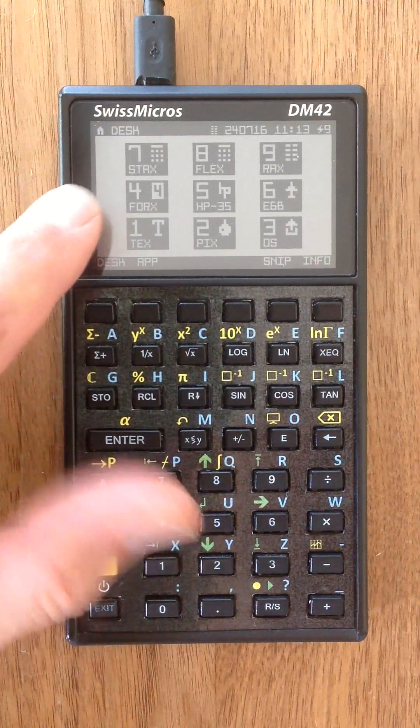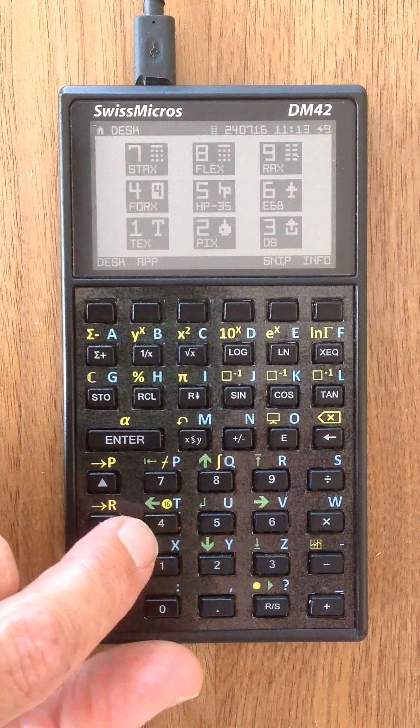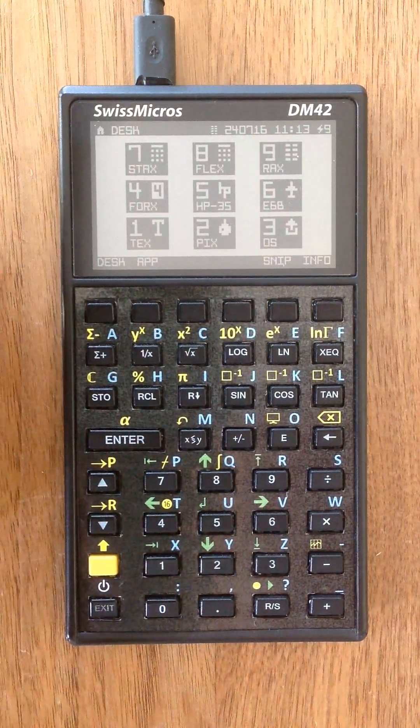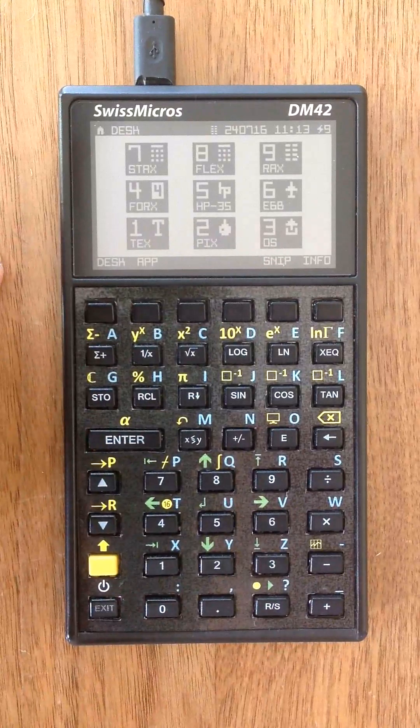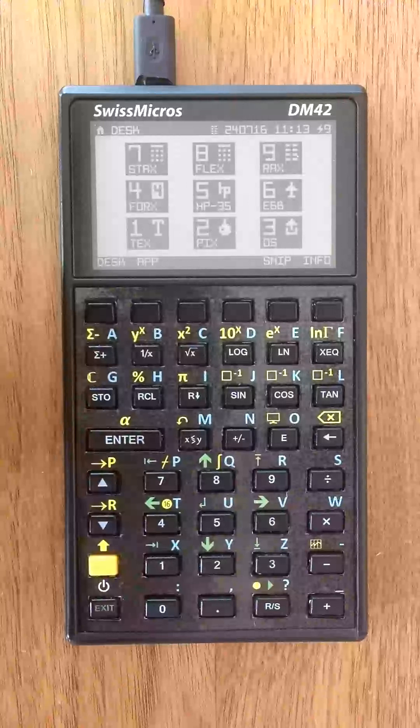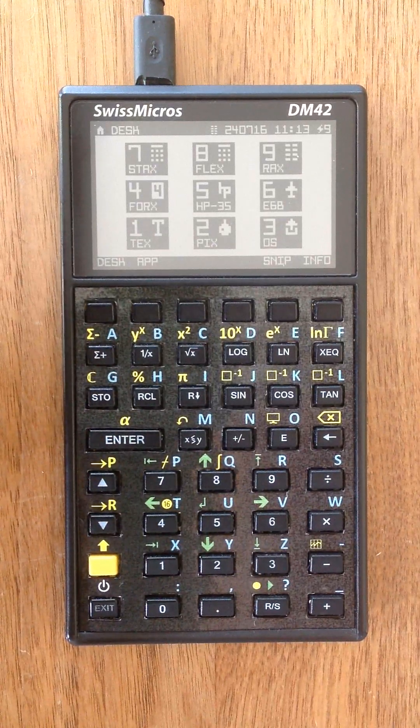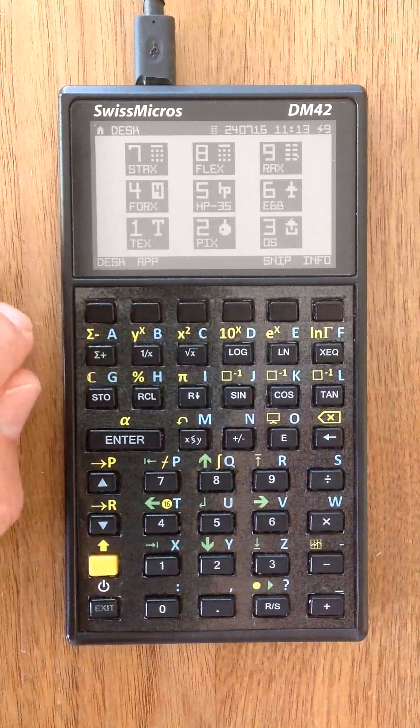So, number four. That's not implemented yet. That should be a FORTH application. But I'm still looking for a standard FORTH application that covers floating point numbers and is easy to port to this calculator.